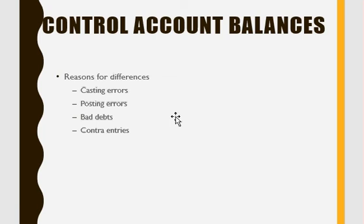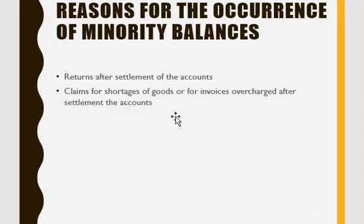Control accounts can have two balances. The reasons can be casting errors, posting errors, bad debts, or contra entries. The normal balance for the sales ledger control account is a debit, but it can also appear on the credit side when we have to pay money to our customers. Similarly, the normal balance for the purchases ledger control account is a credit, but sometimes we need to collect money from our creditors — for example, if we overpaid or if an invoice was overcharged.